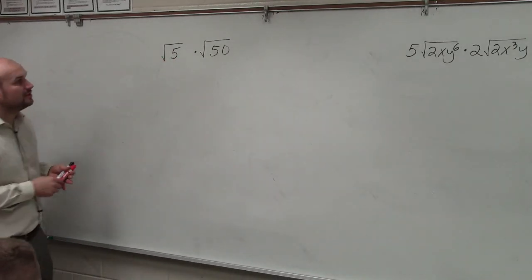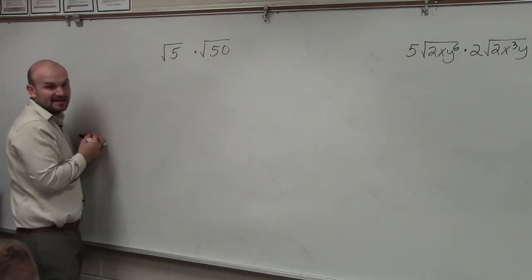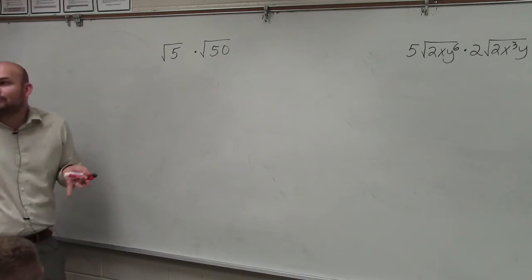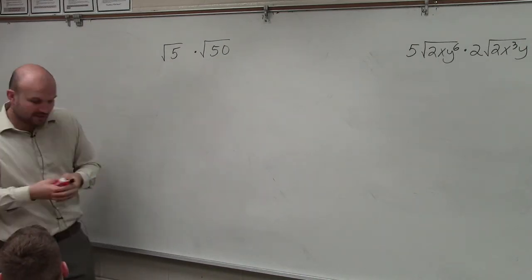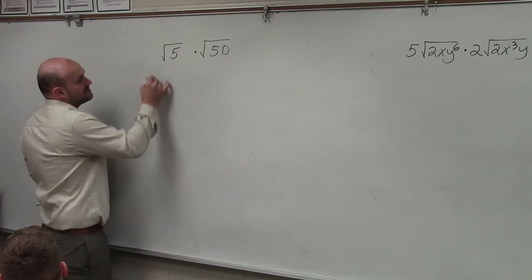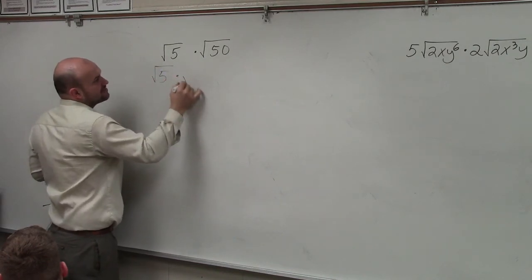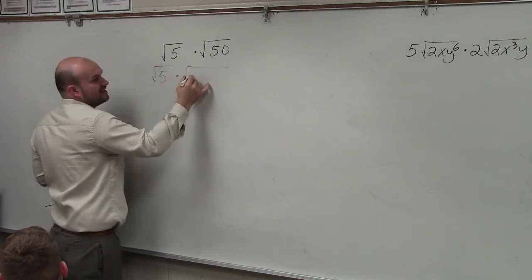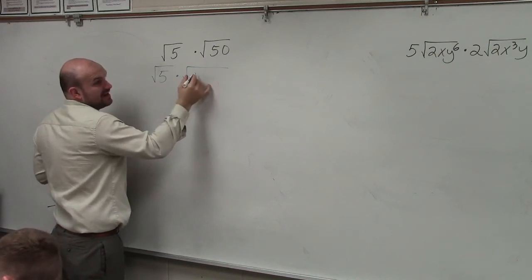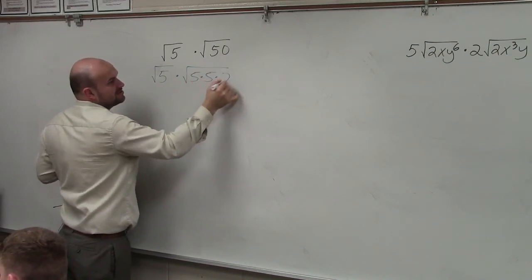Basically, I can't simplify 5. I can't break it down. That is a prime number. However, if I look at 50, I can break down 50. This can be broken into 5 times 10, which can be broken into 5 times 2. So that would be 5 times 5 times 2.